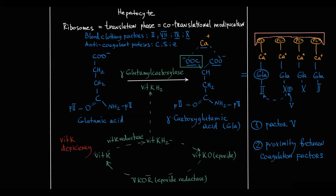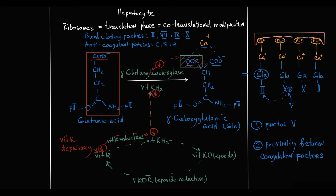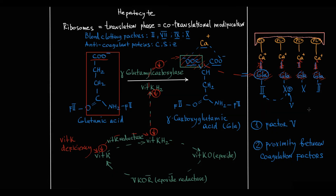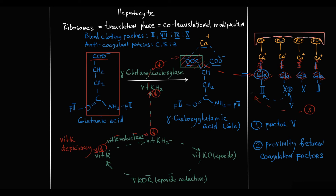How does vitamin K deficiency affect coagulation? If the concentration of vitamin K decreases, the level of reduced vitamin K decreases. Without the essential cofactor, gamma-glutamyl carboxylase cannot provide carboxylation, resulting in formation of defective prothrombin molecules with just one carboxy group. In vitamin K deficiency, prothrombin is present in the blood, but because these are defective prothrombin molecules with only one carboxy group and no gamma-carboxyglutamic acid, they are unable to bind calcium and thereby cannot bind to negatively charged phospholipids on the plasma membrane. Similarly, factor 10, also a vitamin K-dependent enzyme, is produced undercarboxylated and cannot bind to the plasma membrane. This disrupts the essential factor of proximity between the protease factor 10 and its substrate prothrombin, so the rate of thrombin formation markedly decreases, manifesting as prolongation of prothrombin time and increase in international normalized ratio (INR).